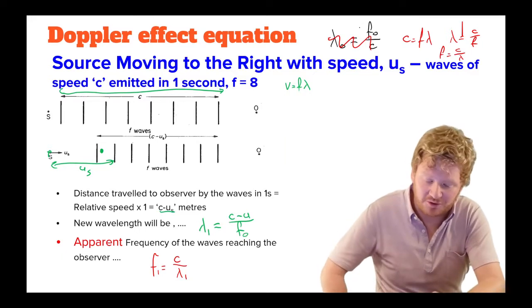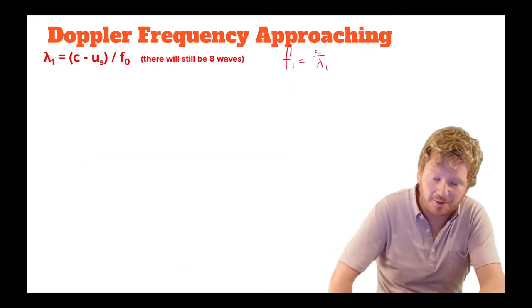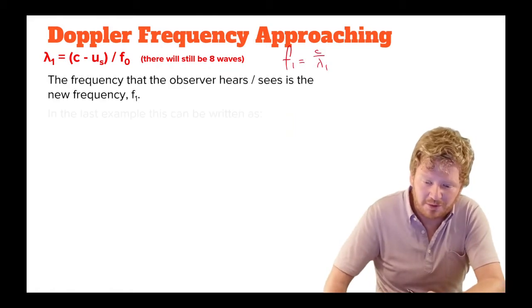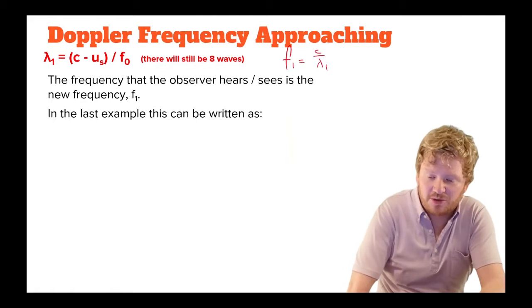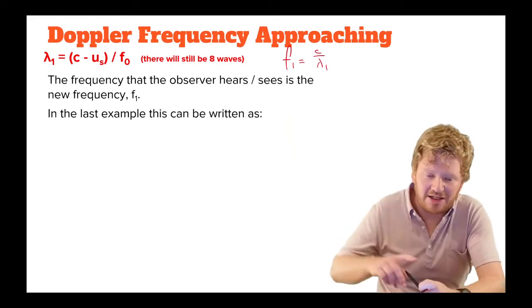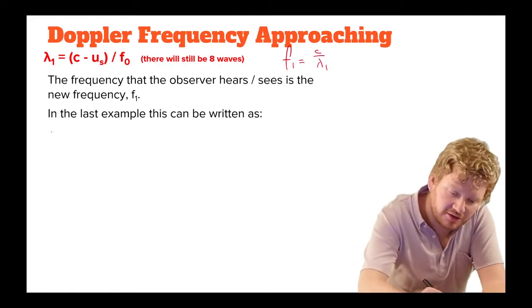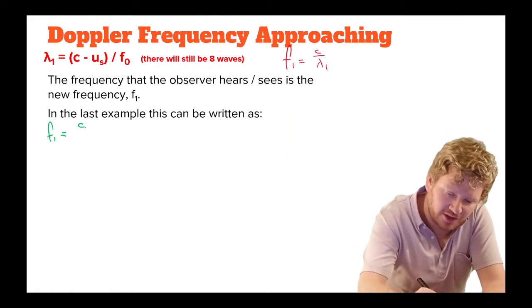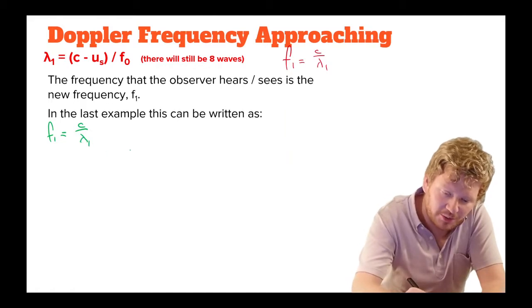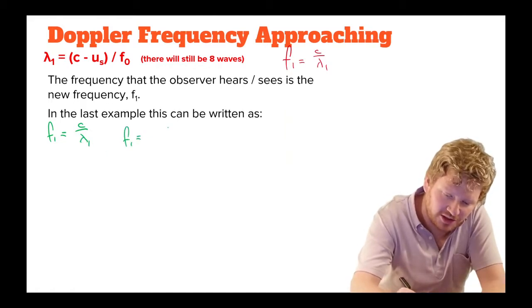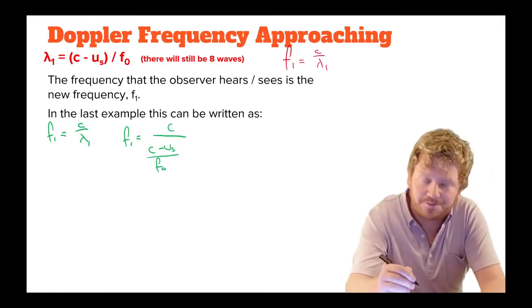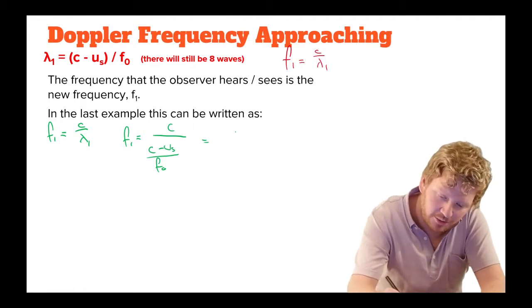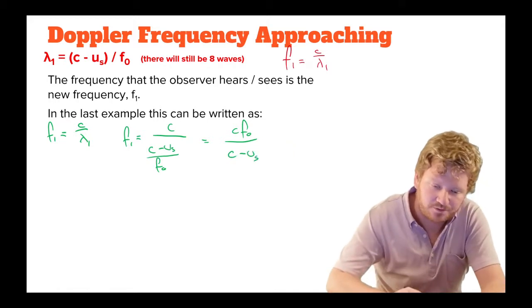And this is the important bit for getting how the equation comes up. So I've got my two equations I've just written up there for memory. The frequency that observer sees or hears is a new frequency that we've called f1. Well, now that means that what we can do is rewrite the last example. We know that f1 is equal to c over lambda 1, and we know what lambda 1 is. So we can say f1 is equal to c divided by c minus u, and I'm going to put this as us this time for u as the source, divided by f0. And if I just rearrange that, that becomes c f0 over c minus us.